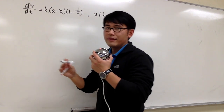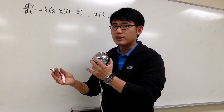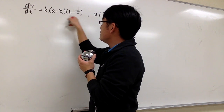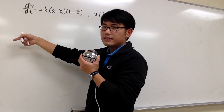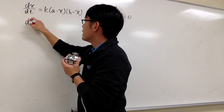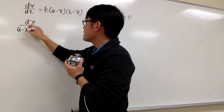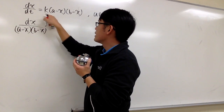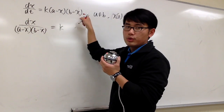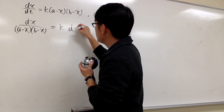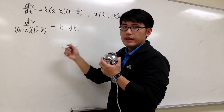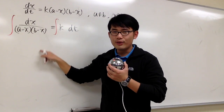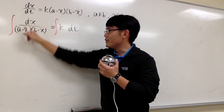To solve this, we first have to collect all the x's along with dx on one side, and all the t's and dt on the other side. Let's divide both factors to the left-hand side, so it looks like we have dx over (a minus x)(b minus x), and this will equal k dt on the right-hand side. Then we can integrate both sides. Check out this video for how to do the integration of that.